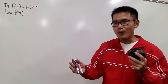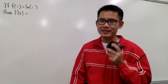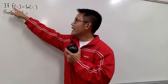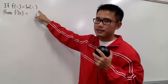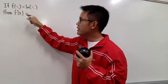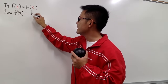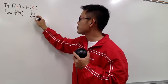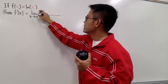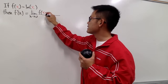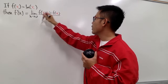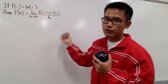The first way is the good old definition of the derivative. When we have f(x) = ln x, we know that f'(x), by definition, is equal to the limit as h goes to 0 of the difference quotient: f(x+h) minus f(x), all over h.